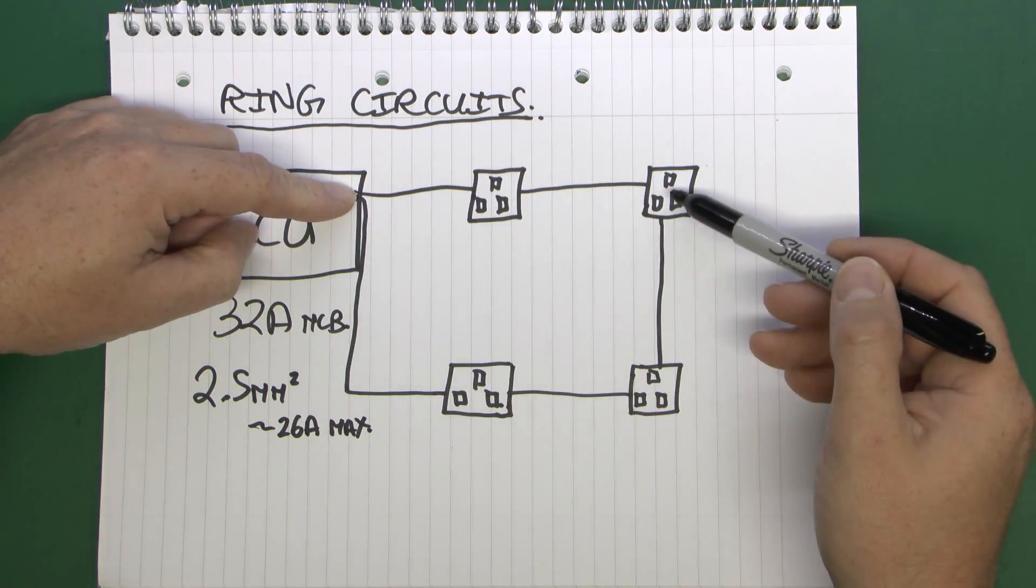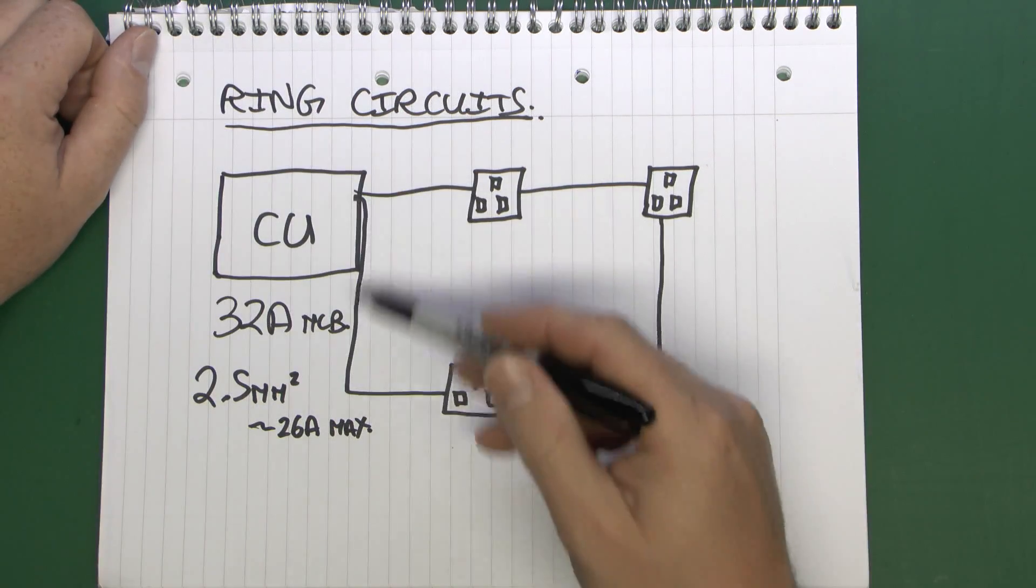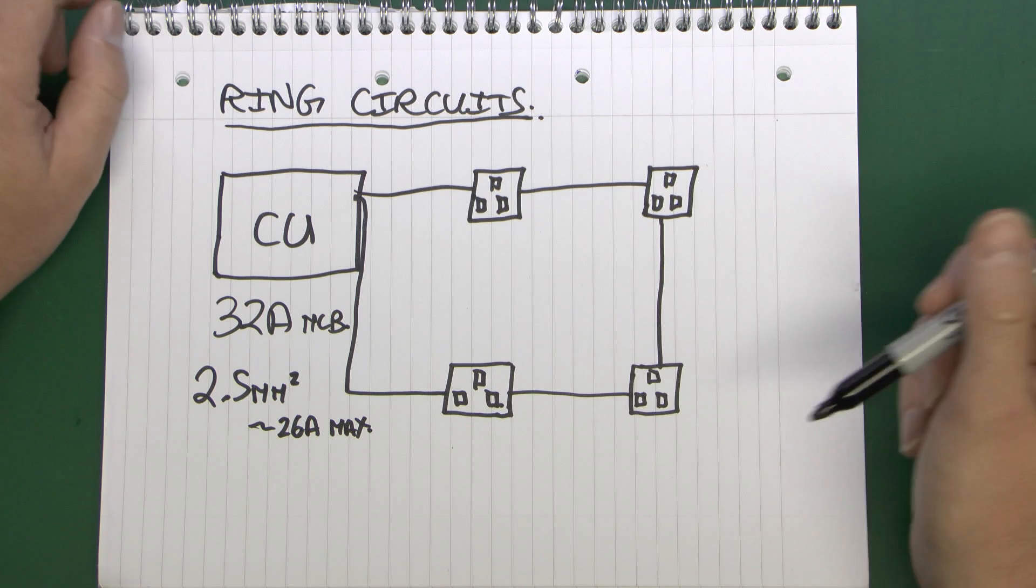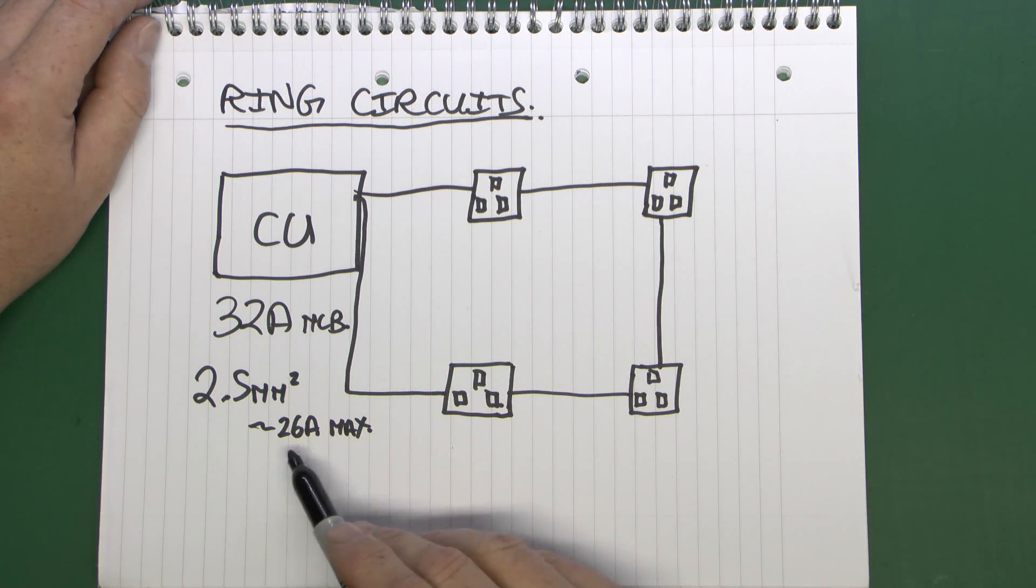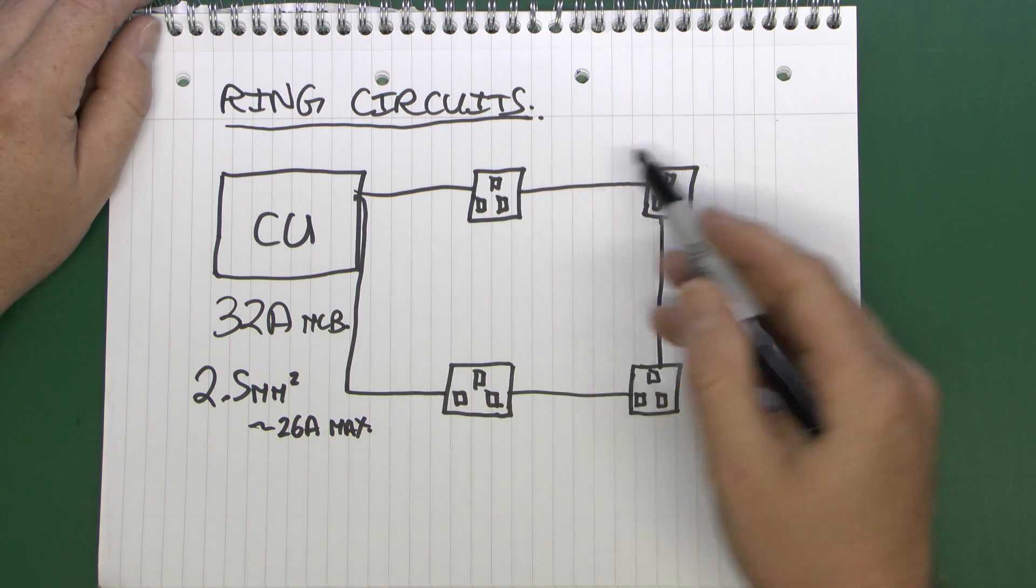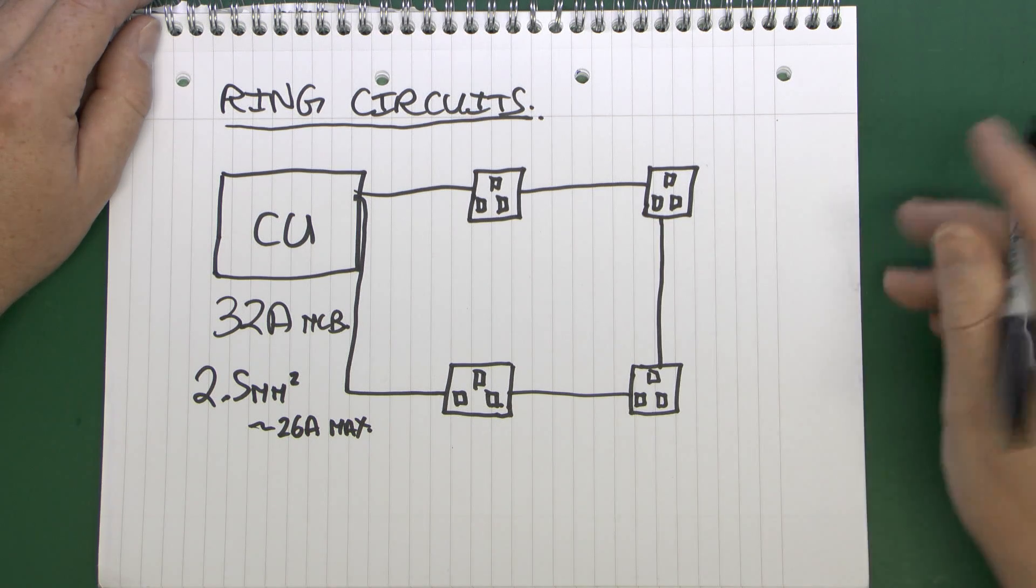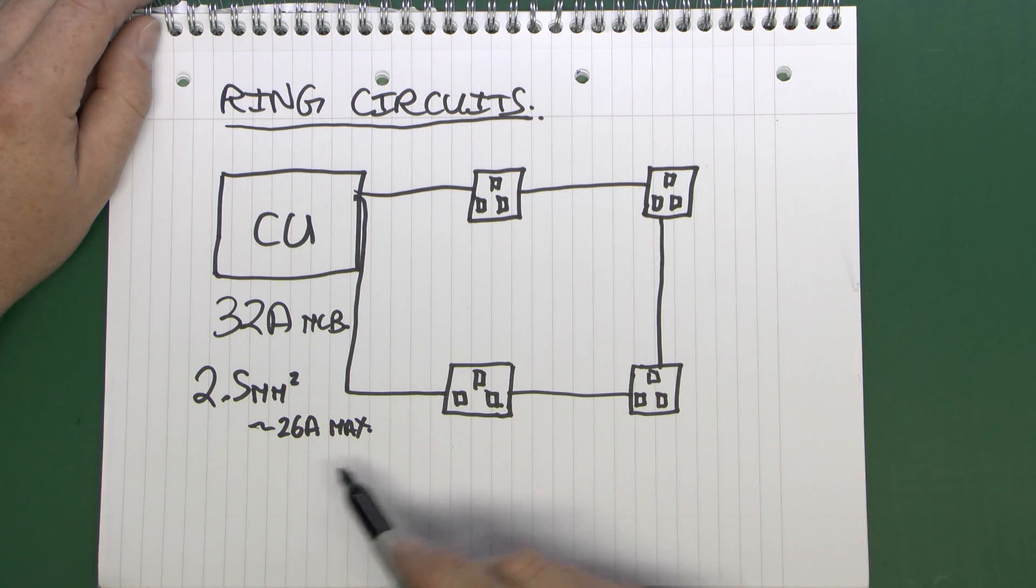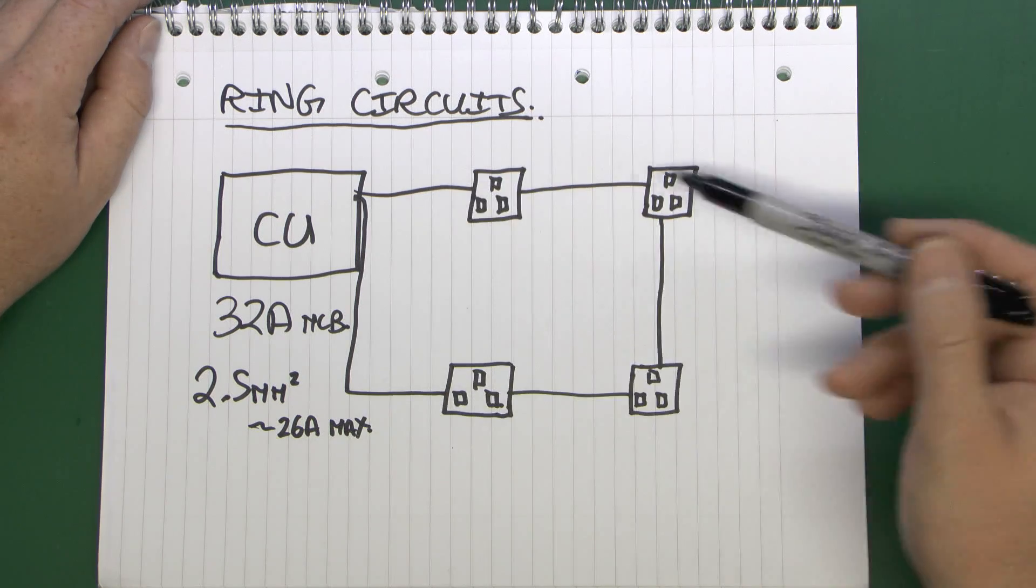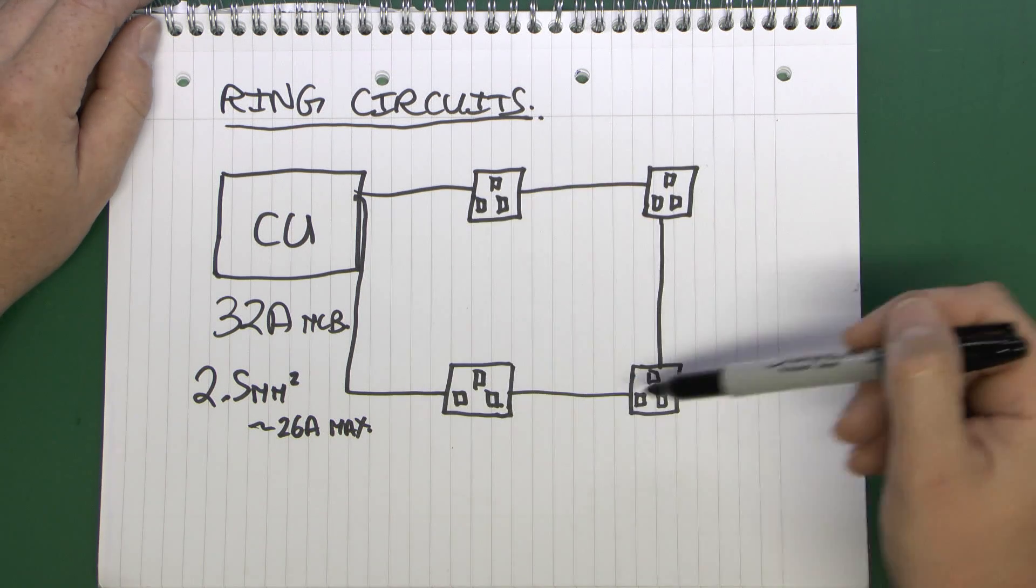Now the point about this particular arrangement is that 2.5 mm² wires are not rated for 32 amps. 32 amps through a 2.5 mm² cable would actually cause it to be overloaded and overheated. So you might wonder what on earth is the point of having small sized wires on a protective device which is too big for them. This is the whole point of having the ring. So 2.5 mm wire is typically rated in the region of about 26 amps absolute maximum. But because you've got two cables effectively going to every point, the current is actually shared amongst the two wires.